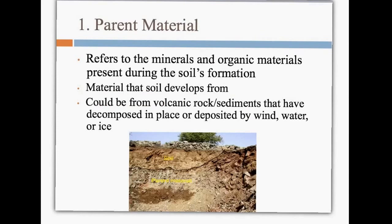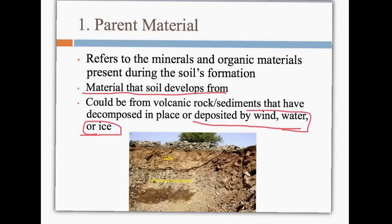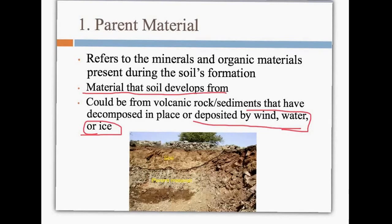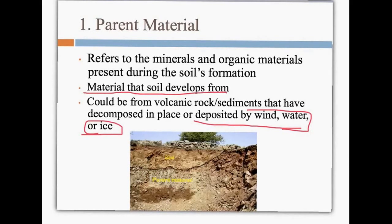The parent material refers to the bedrock, or the minerals and organic materials present during the soil's formation — ultimately the material that the soil comes from. It could be from volcanic rock or sediments that have decomposed in place, or been deposited by wind, water, or ice, which are agents of erosion. So erosion can bring soil to an area or remove soil from an area.